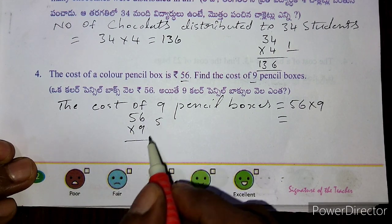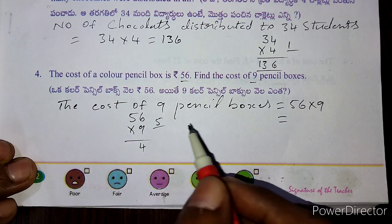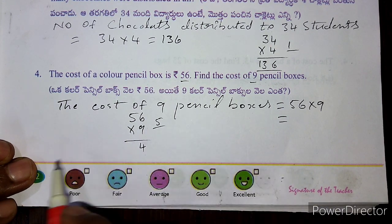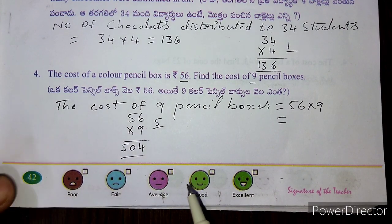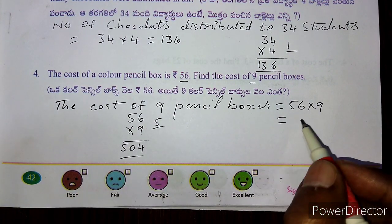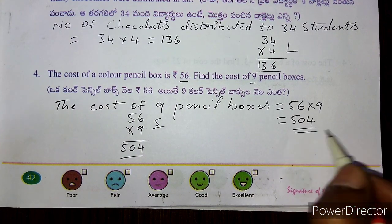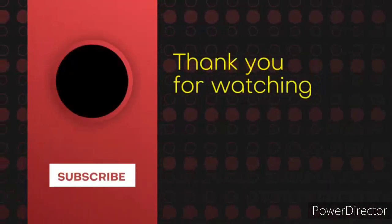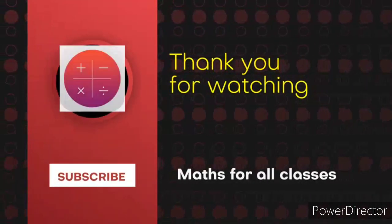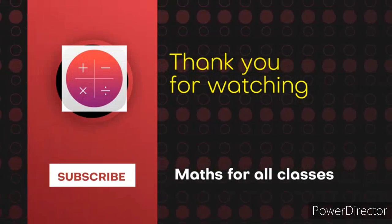56 into 9: 9 sixes are 54, carry 5, 9 fives are 45, plus 5 is 50. The answer is 504 rupees.